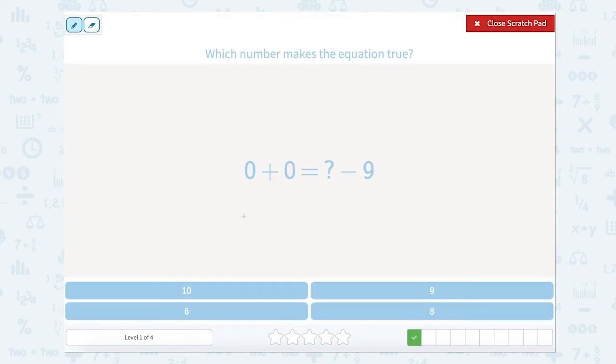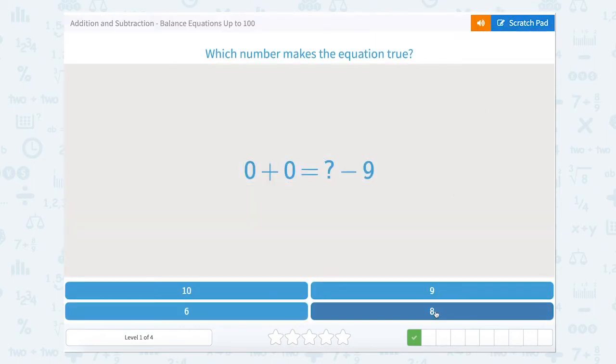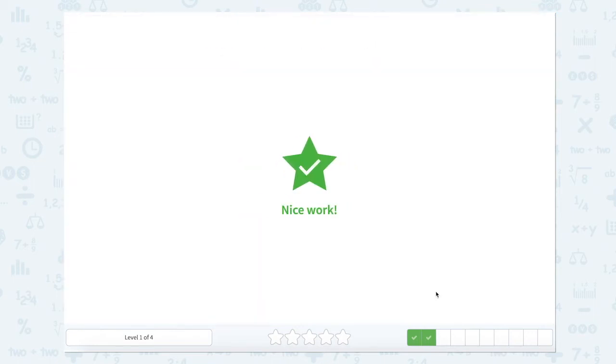Now let's look at the scratch pad. This side of the equal sign is 0 plus 0. Well, we know that 0 equals something minus 9. So something minus 9 equals 0. So what would that be? Well, 9 minus 9 equals 0. So let's close our scratch pad. There's 9. Nice work.